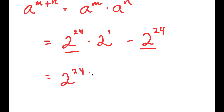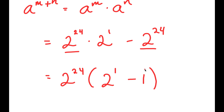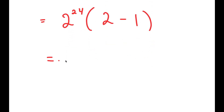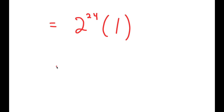So I get 2 to the power of 24 times: 2 to the power of 24 divided by 2 to the power of 24 is just 2 to the power of 1, and negative 2 to the power of 24 divided by 2 to the power of 24 is just negative 1. So I get 2 to the power of 24 times (2 to the power of 1 minus 1), which equals 2 to the power of 24 times 1, and anything times 1 is just itself — so this equals 2 to the power of 24.